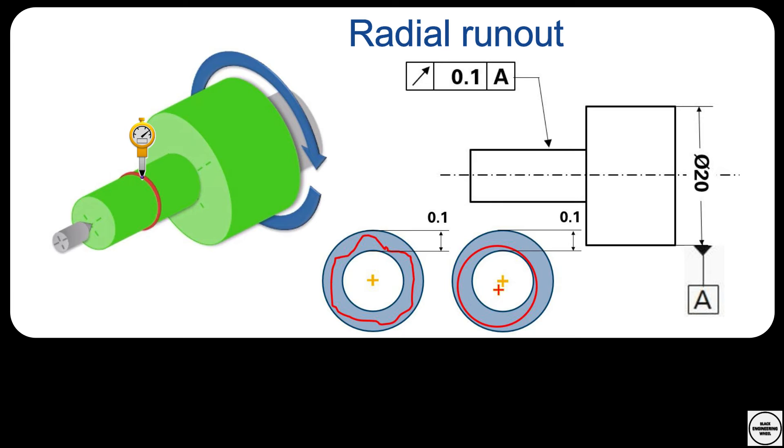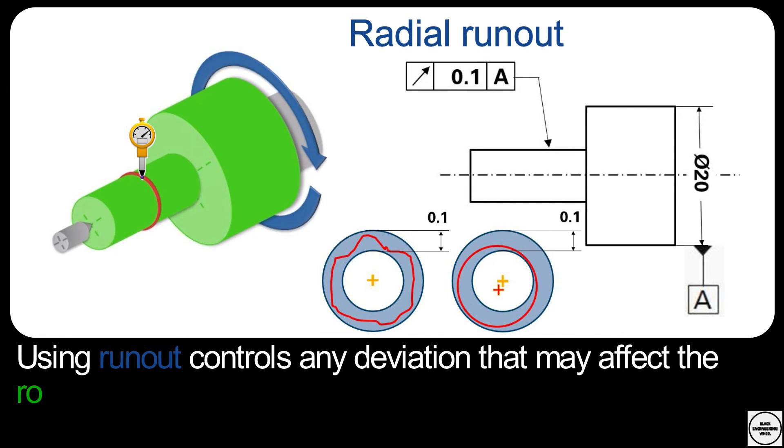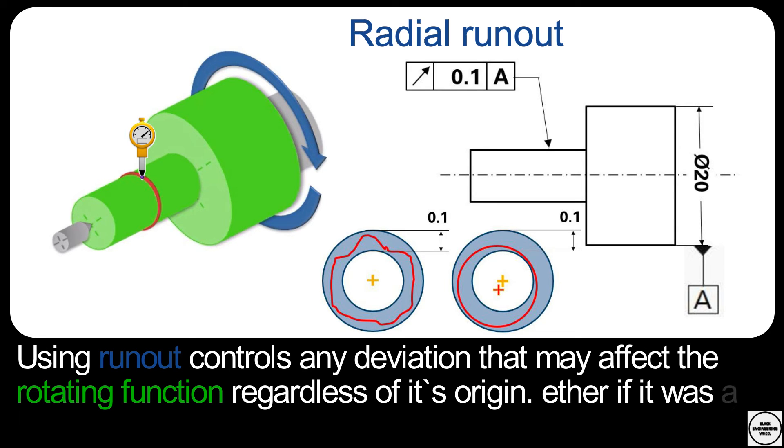So using the runout tolerance, I cannot know where the deviation is coming from. I don't know what is causing the error, but I know that there is an error that will affect the rotating function around A with a value, for example, of 0.1, regardless of the origin of this error.